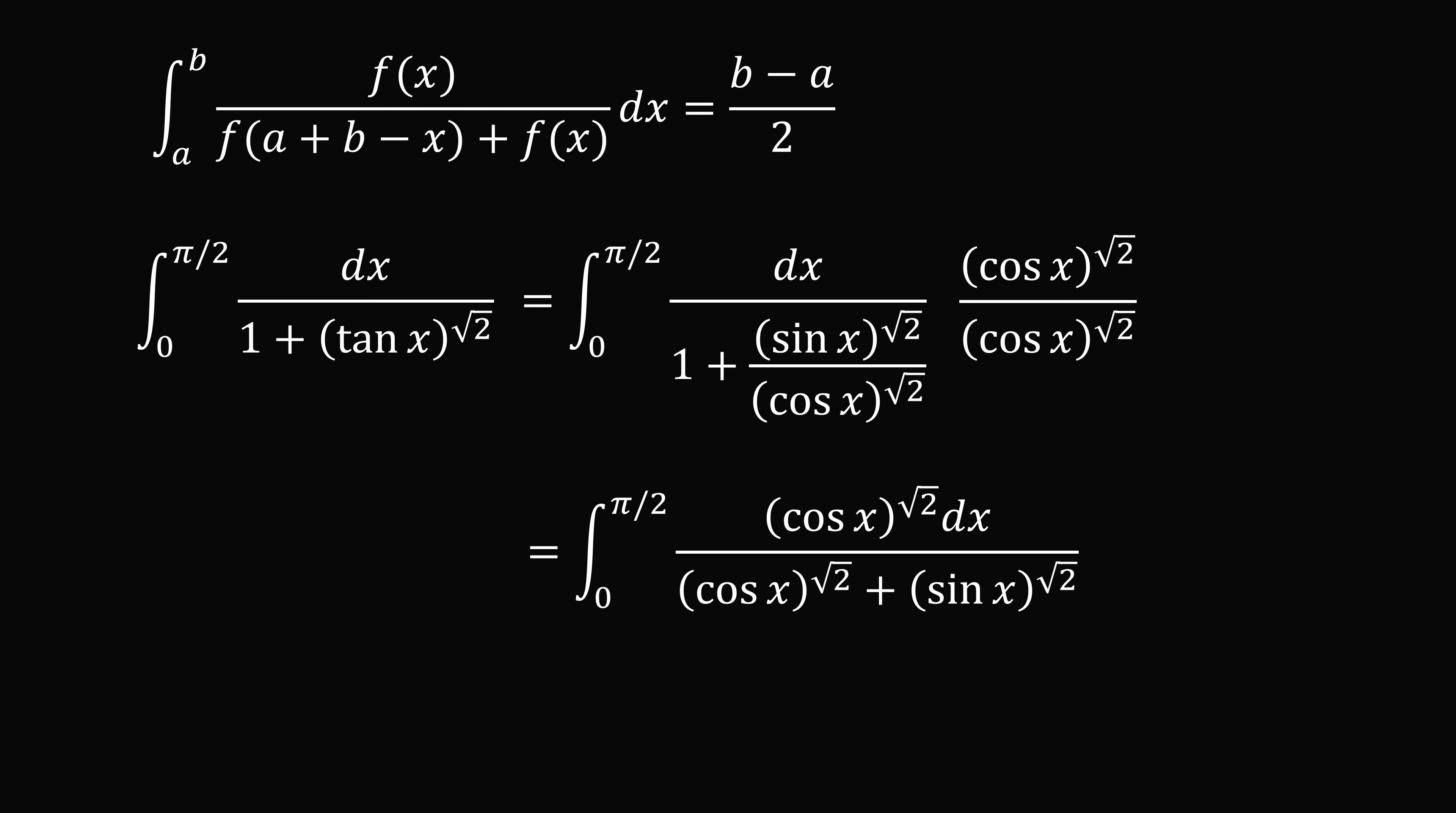So this simplifies to the integral from 0 to pi over 2 of cosine x to the power of root 2 dx divided by cosine x to the power of root 2 plus sine x to the power of root 2. And now we have an integral in exactly the form we want.